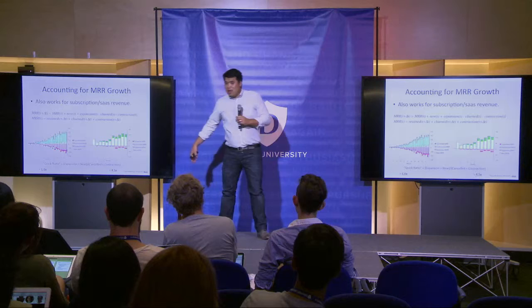Our general partner Mamoon actually coined a term for this — he called it quick ratio. The one on the right is 4.5X; the one on the left is 1.6X.